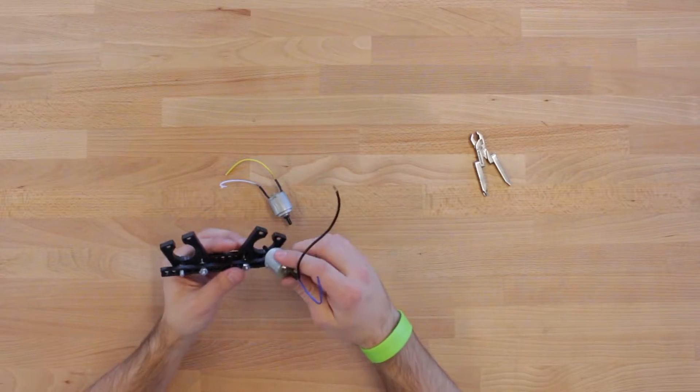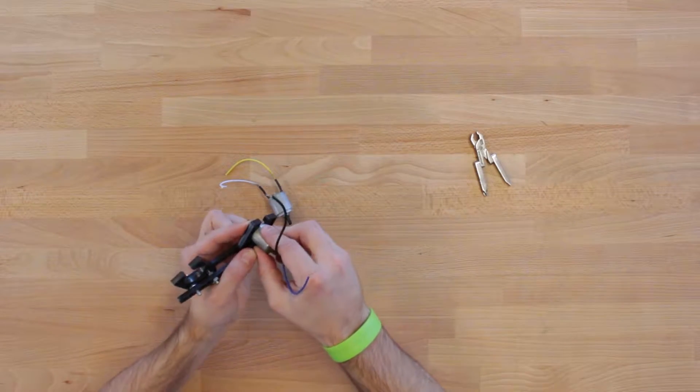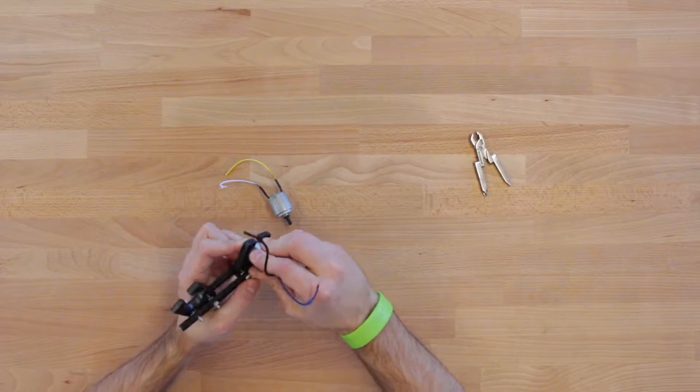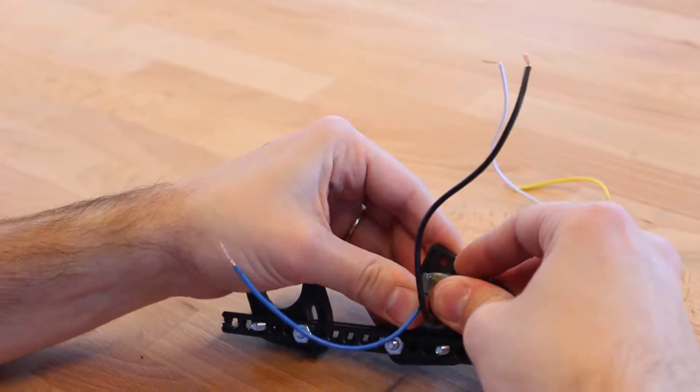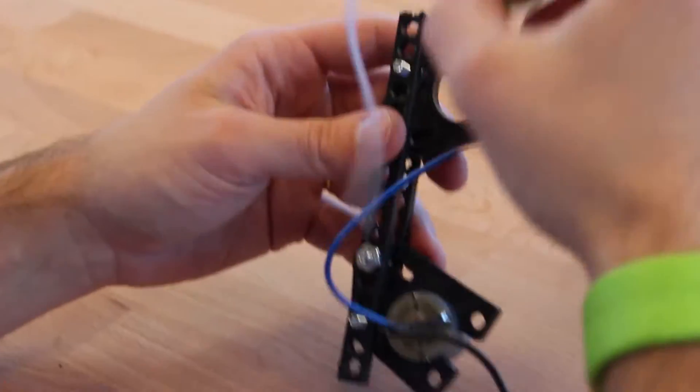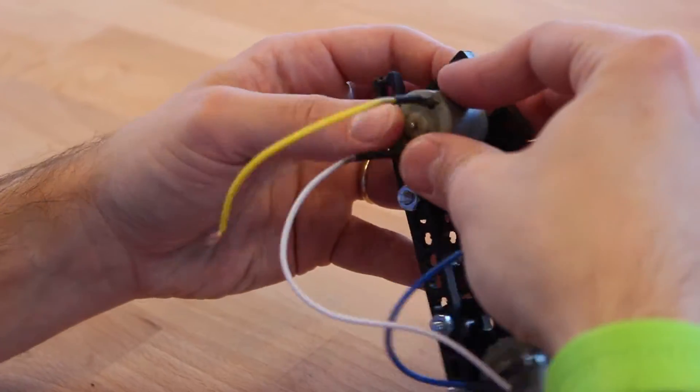Next, we're going to install our motors. You may need an adult's help for this. Using a little bit of force, wiggle it back and forth to feed it through the hole in the motor mounting plate. Repeat this step for the other motor.